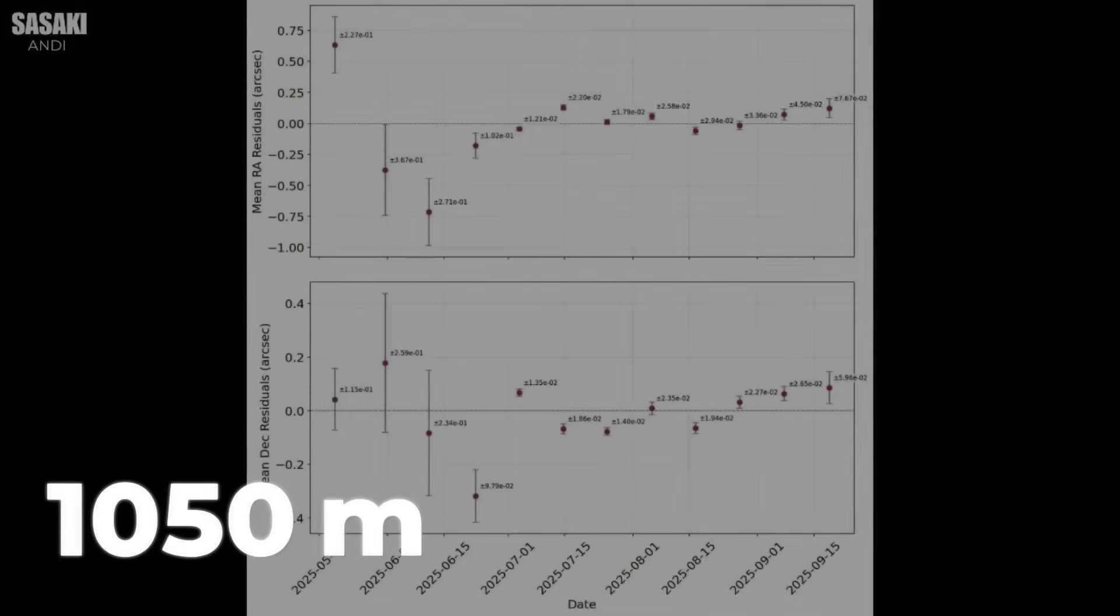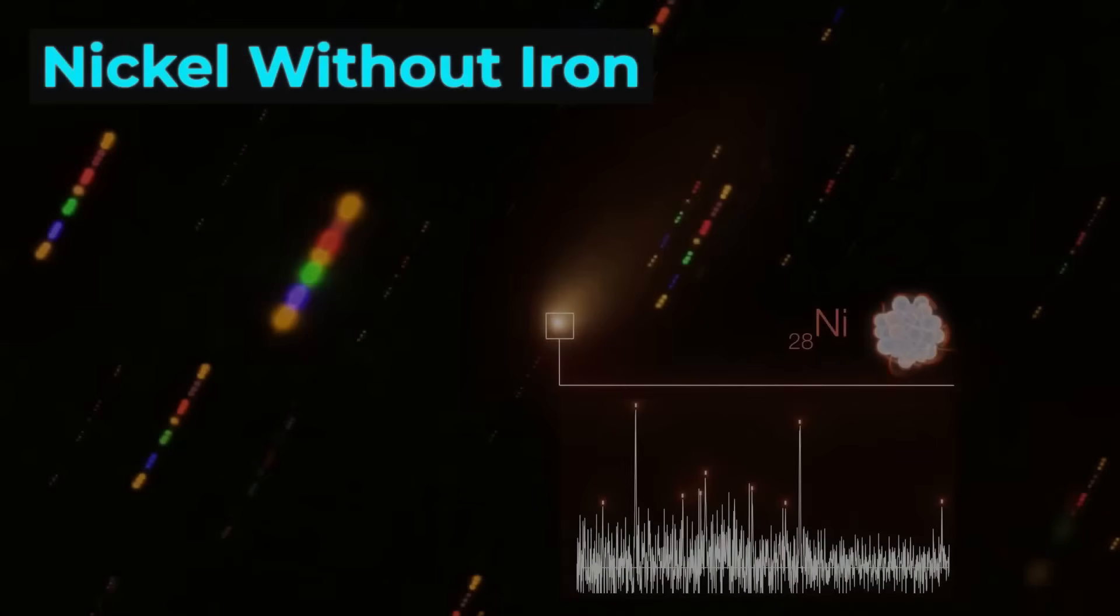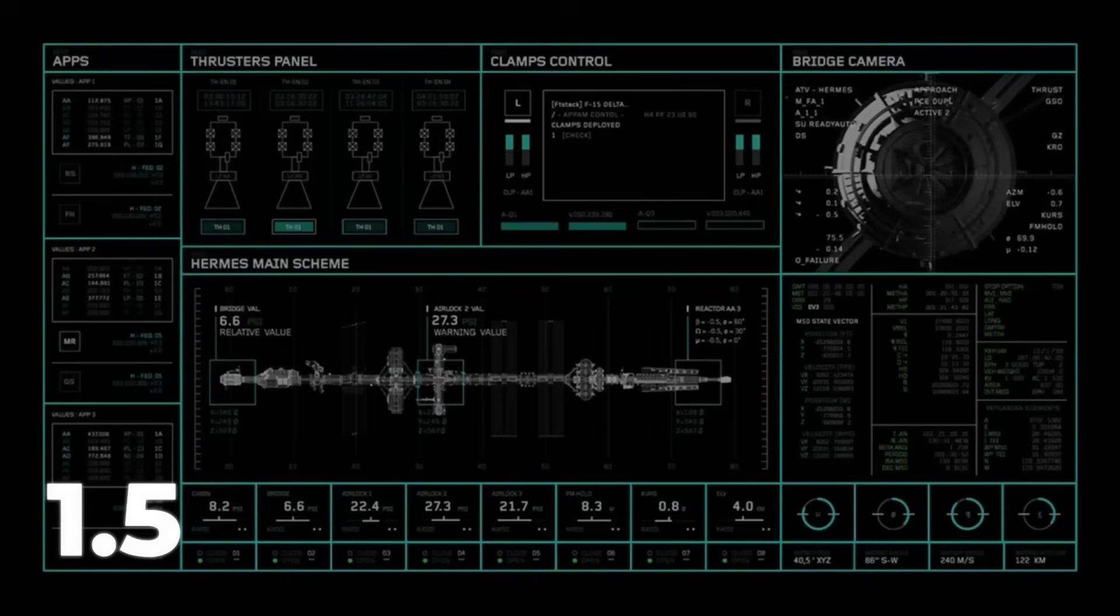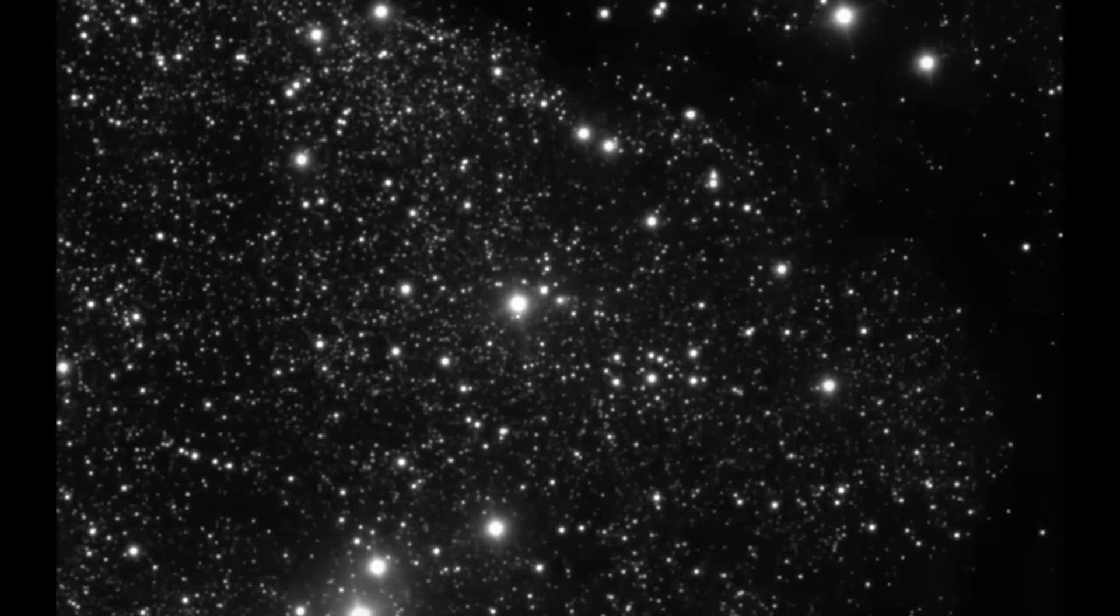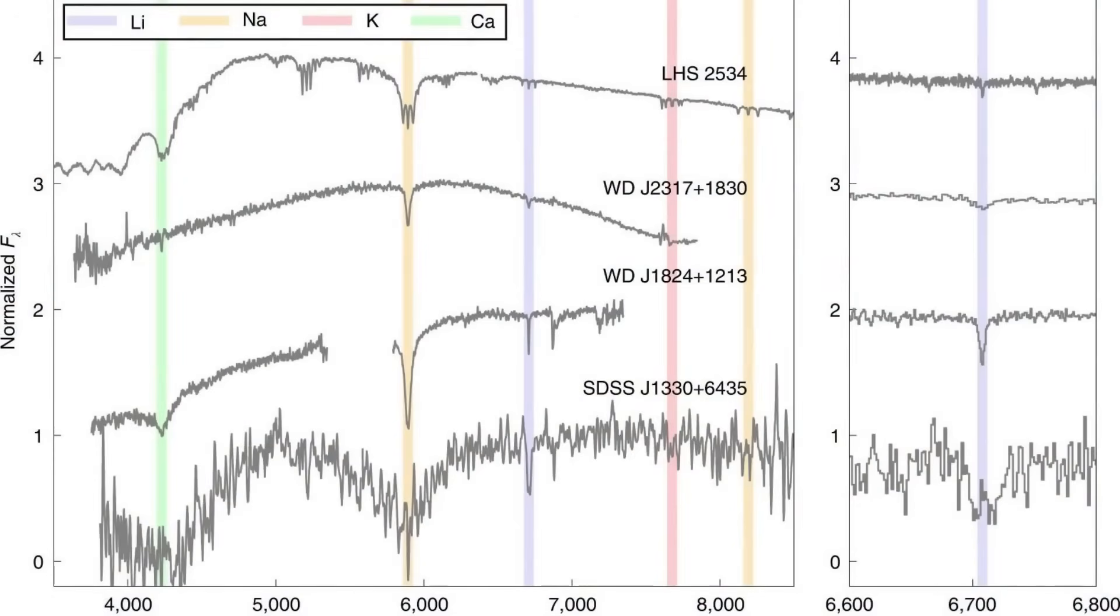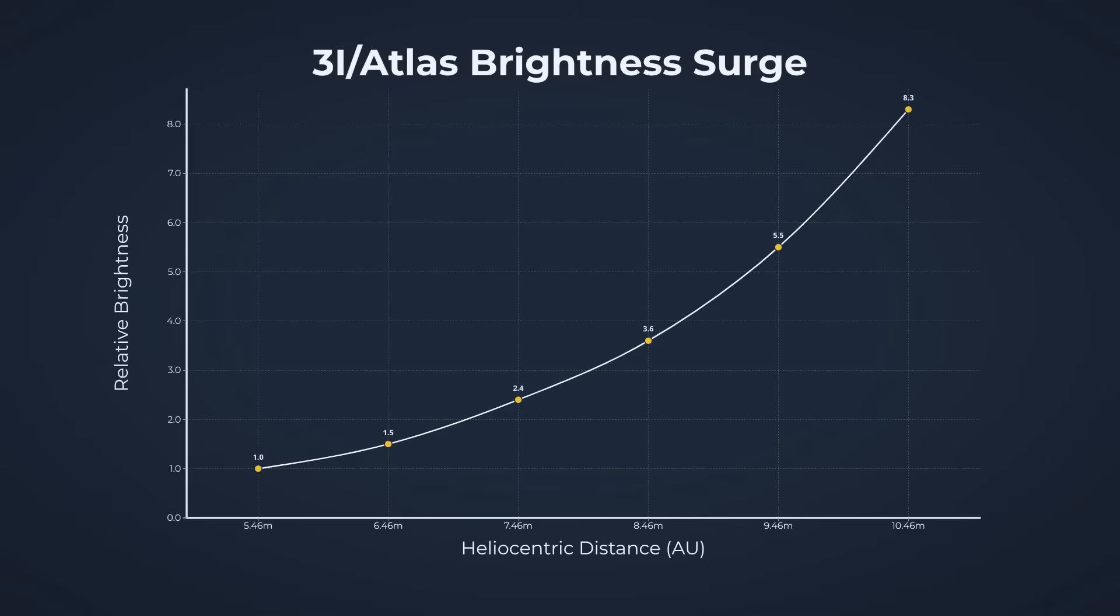One of the most important things to remember about 3i Atlas is just how rare it is. In the entire history of modern astronomy, only three confirmed interstellar objects have ever been observed. Oumuamua, Borisov, and now Atlas. That's it. Out of billions of stars and trillions of comets in the galaxy, only these three have revealed themselves as visitors from beyond our solar system.